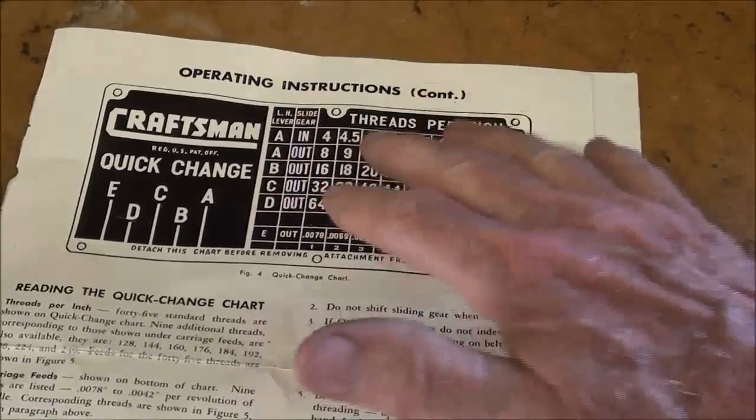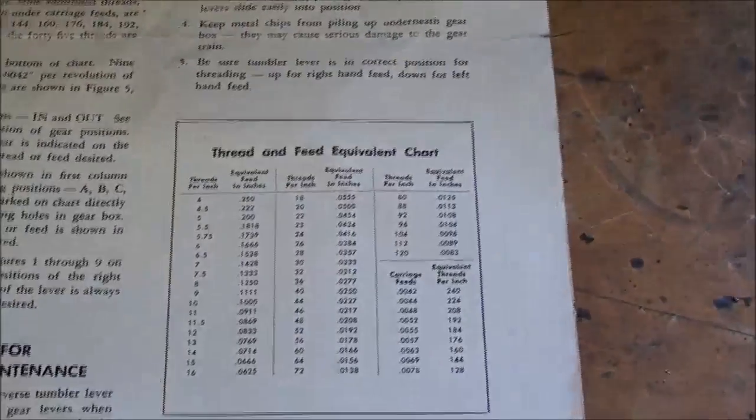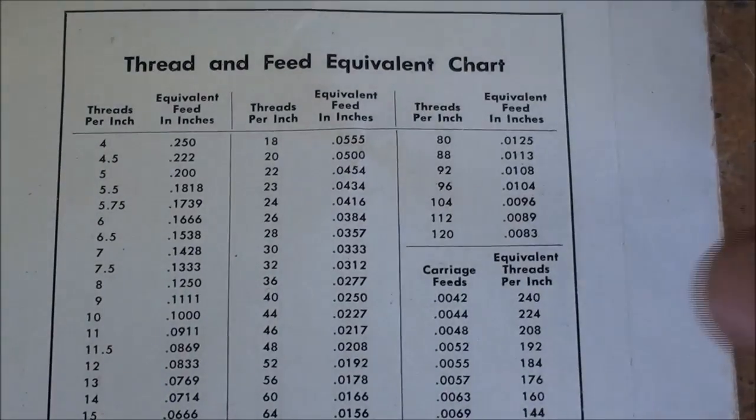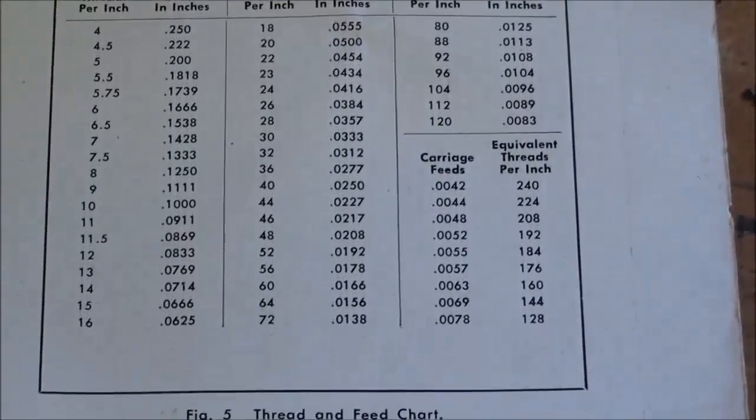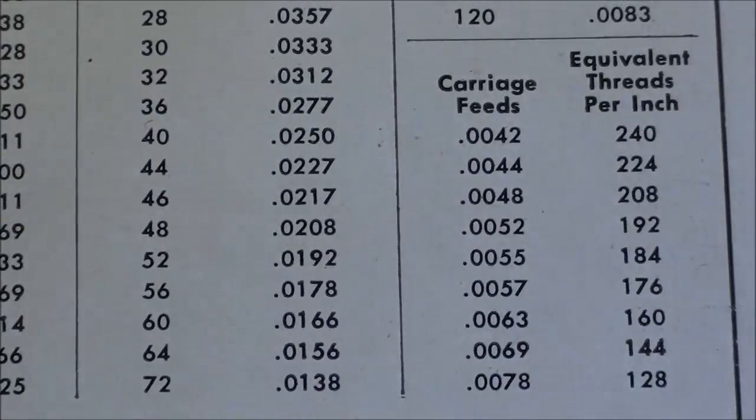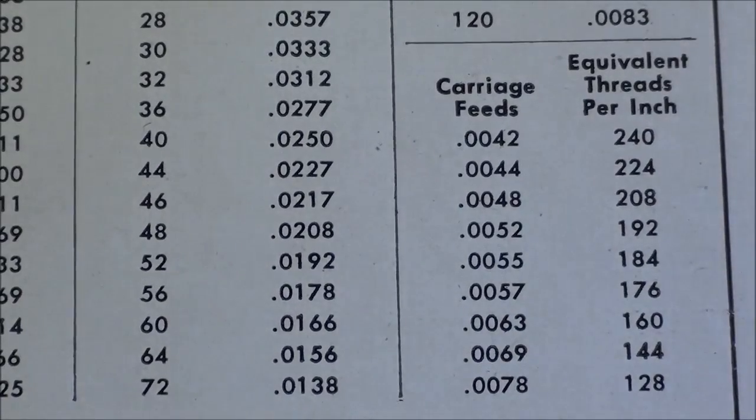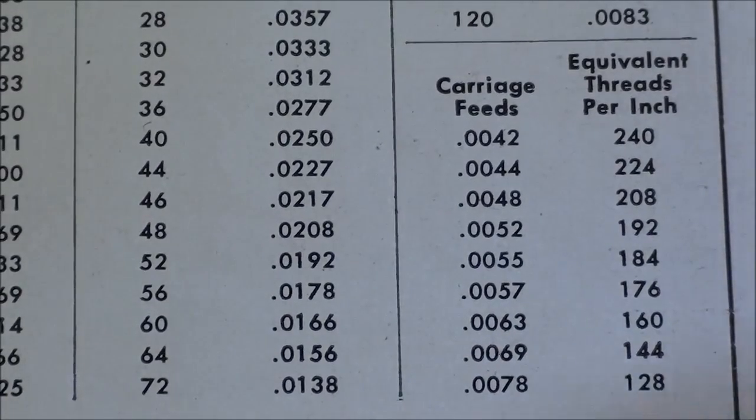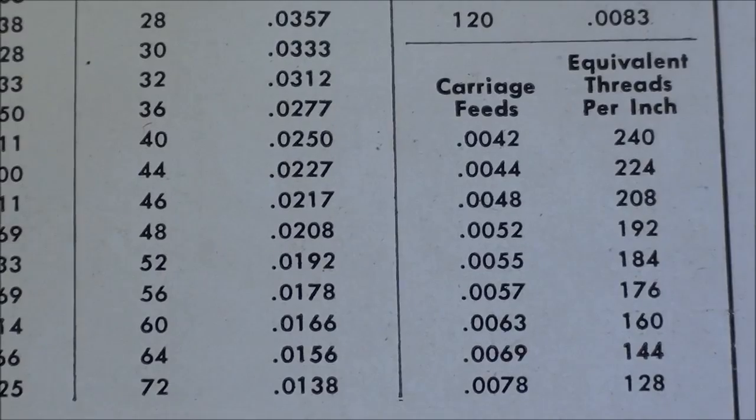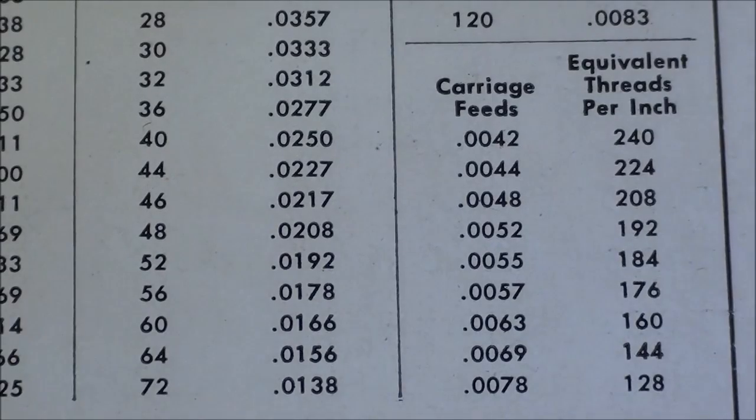Let me go over to the other bench and show you something regarding this, what is the finest feed. You'll recognize this from the last video - that's the instruction sheets and operating sheet for the quick-change gearbox. Near the bottom of this page, here's a thread and feed equivalent chart. For the carriage feeds, the finest one was four-thousandths, it's equivalent to 240 threads per inch. That just slayed me that they're comparing it to threads per inch.